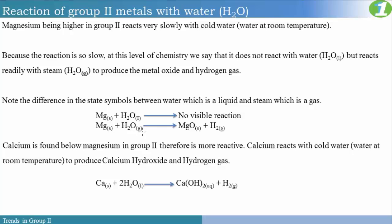Looking at these equations: magnesium metal will not react with cold water or reacts very slowly — no visible reaction or observable change. Whereas if you react magnesium with steam, note the state symbols are different — steam is gas, water is liquid. We form magnesium oxide and hydrogen gas. This hydrogen gas can be tested using a lit splint; if placed in the gas, it should go out with a pop. If you react magnesium with excess steam, we get a different product — magnesium hydroxide plus H₂ — but this only happens if excess steam is used.